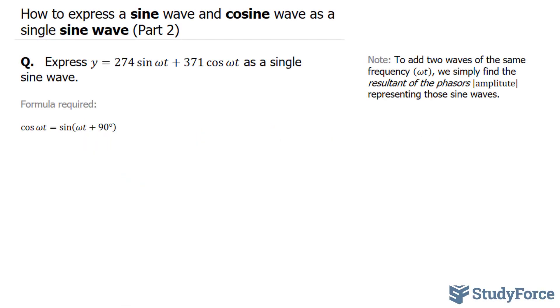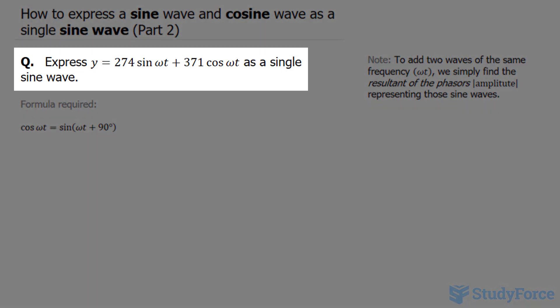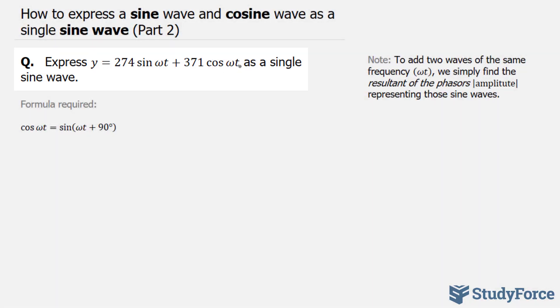In this video, I'll show you how to express a sine wave and a cosine wave as a single sine wave. This is part two in the series. The question reads: express y is equal to 274 sine omega t plus 371 cosine omega t as a single sine wave.